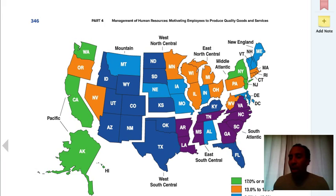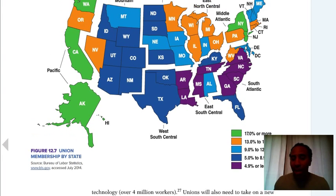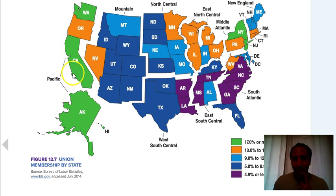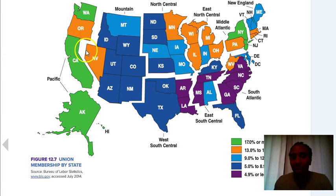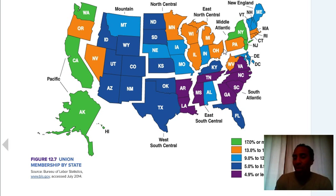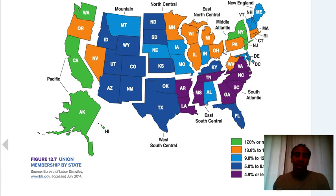Here is a union membership map by state. California is in the green category at 17% or more, along with Alaska and Washington. The 13% to 16.9% range includes Oregon and Nevada, and states along the upper East Coast and Midwest. The 9% to 12.9% range probably doesn't have too much going on in terms of industry. It goes all the way down to 4.9% or less in the South and Southeast.